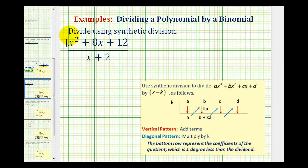Here we have one x squared plus eight x plus 12. So now the coefficients will be one, eight, and 12. And now because we're dividing by x plus two, we're going to have a negative two out here, and now we can divide using synthetic division.